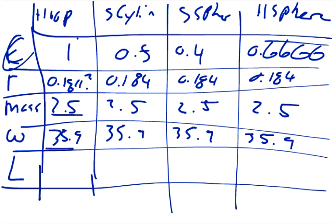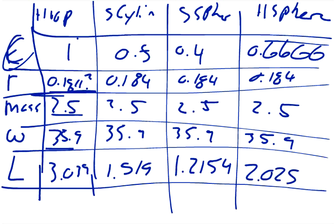So k times r squared times, and just make sure you have to square that number. You're not just going to put in 0.184, you're going to put in 0.184 squared, which is 0.033856. And so then you get it all put in, and you're going to get the angular momentum of the hoop is 3.039. Of the cylinder is 1.519. Of the solid sphere is 1.2154. And of the hollow sphere is 2.0257.